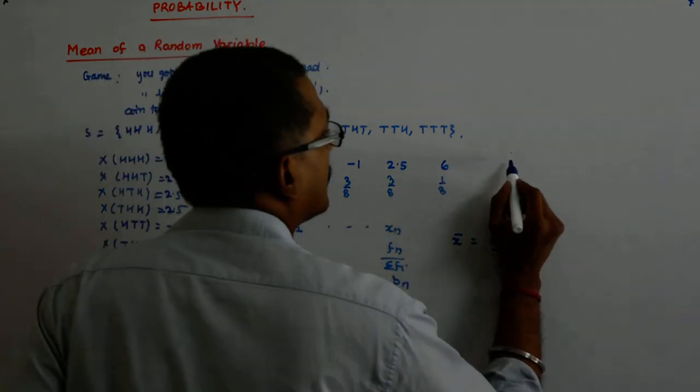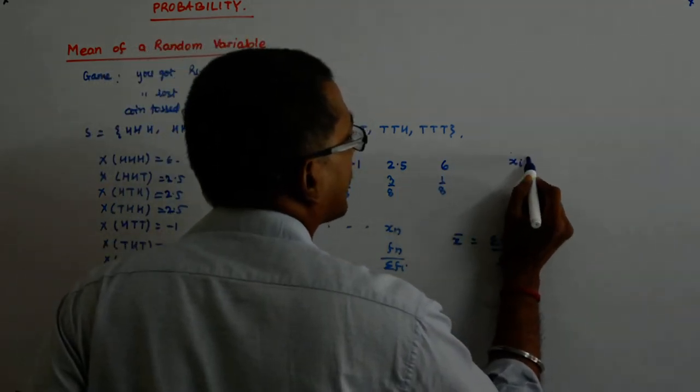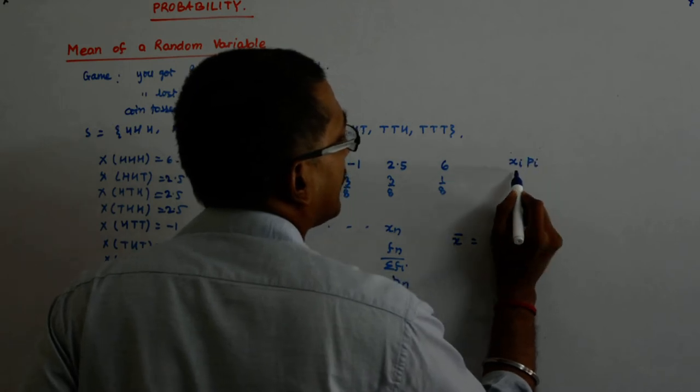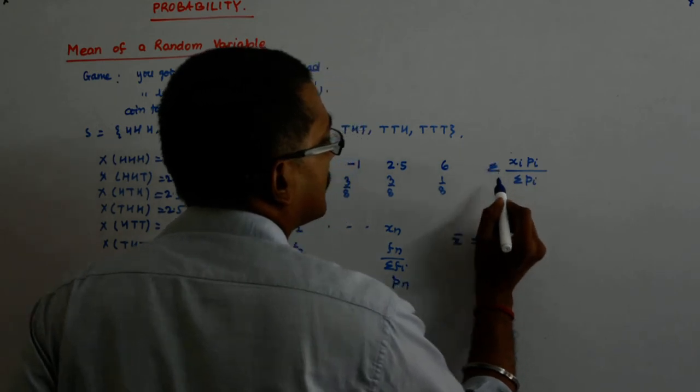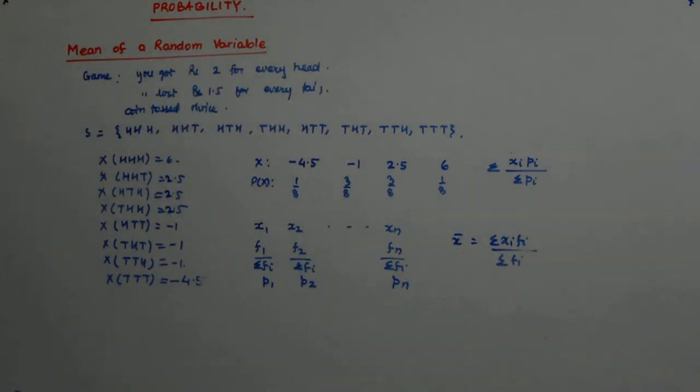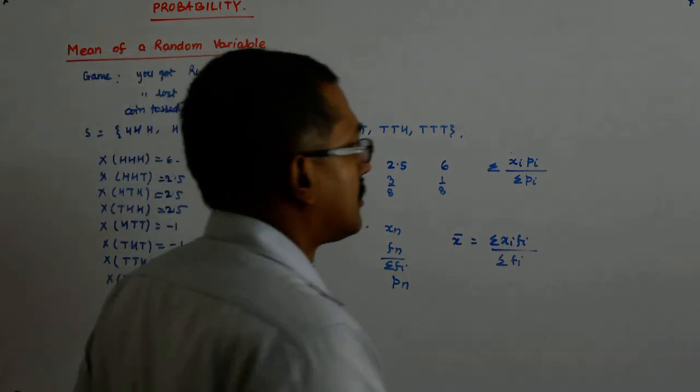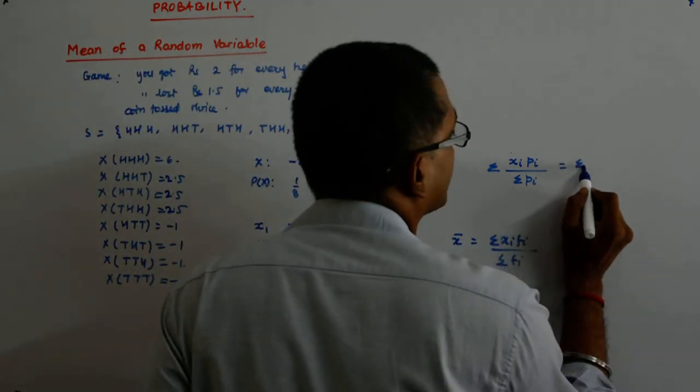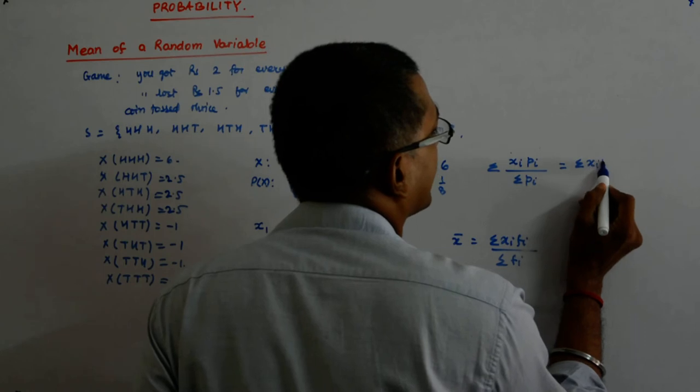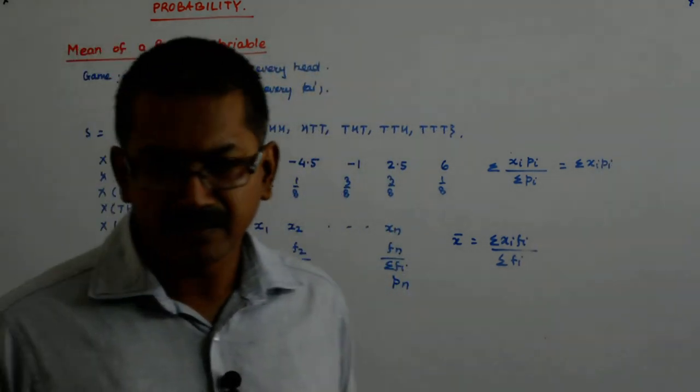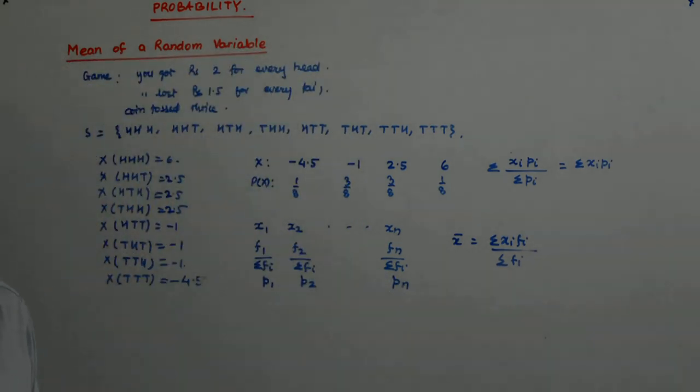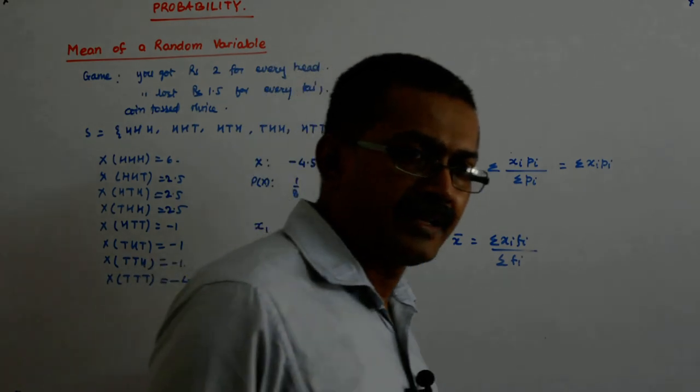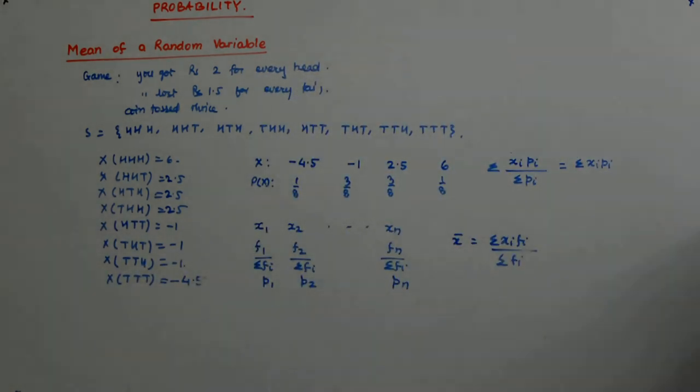I apply the same thing here. X bar is equal to summation xi fi divided by summation fi. If I divide this by summation fi, what does it become? It actually becomes p1, p2, pn. So in effect, if I do summation xi into pi, that should be the mean. What is summation pi? 1. That is how the mean is defined for a probability distribution. That is why and that is how.